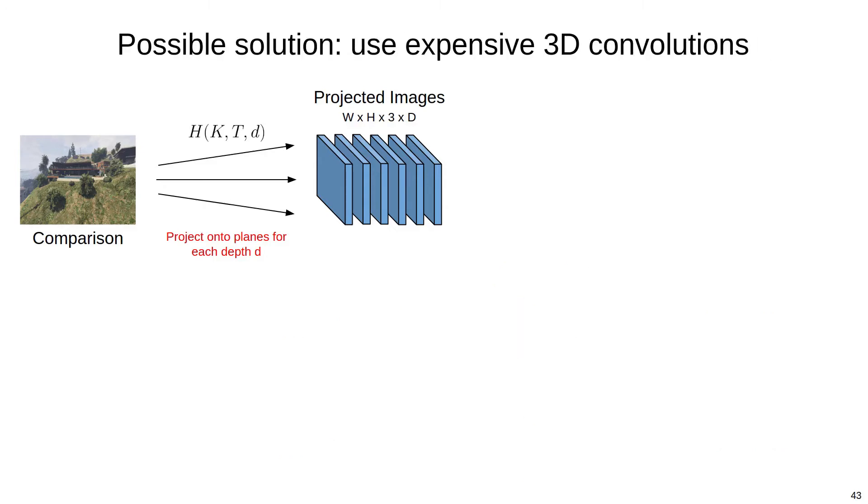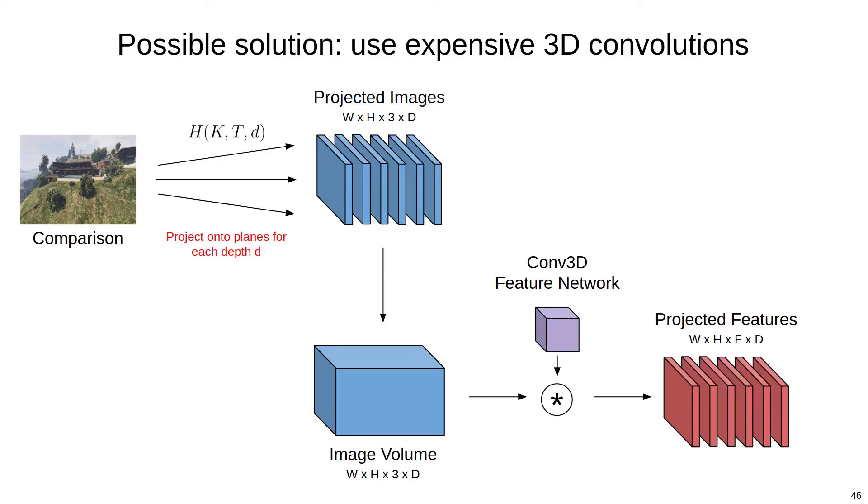Another option is to concatenate the projected images into a volume and then extract features from this volume directly using 3D convolutions. So we take all of our projected images, concatenate them into a volume, and then apply one or more 3D convolutions to extract features. This is a fairly flexible approach, but we'd like to avoid 3D convolutions because they're much more expensive than their 2D counterparts.